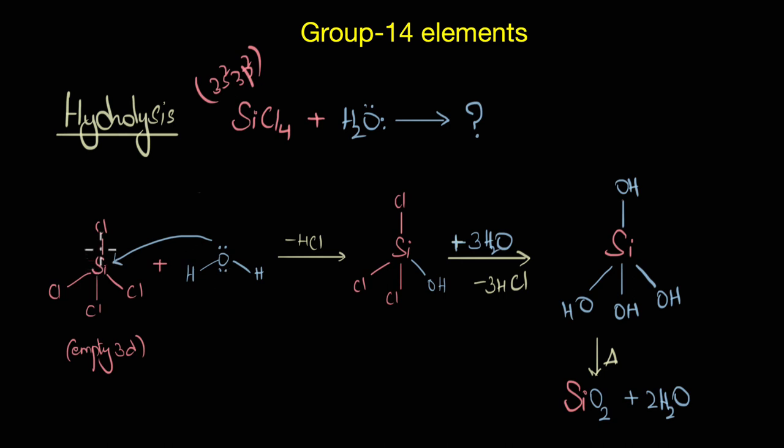When that happens, water breaks this Si-Cl bond one by one and replaces it with hydroxyl group. The final product of this hydrolysis reaction is nothing but silicic acid. This on heating will give you a white solid of silicon dioxide.